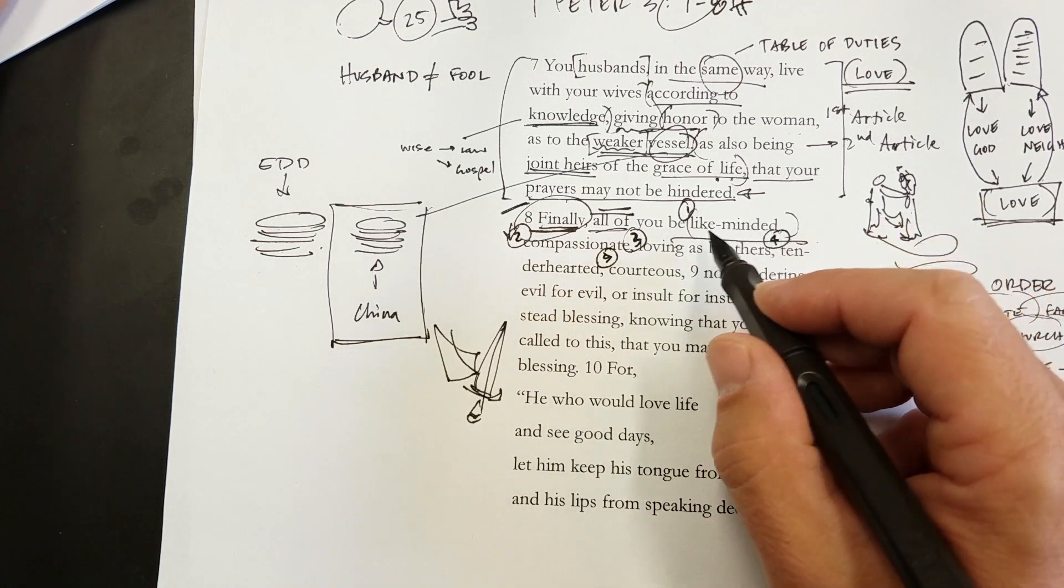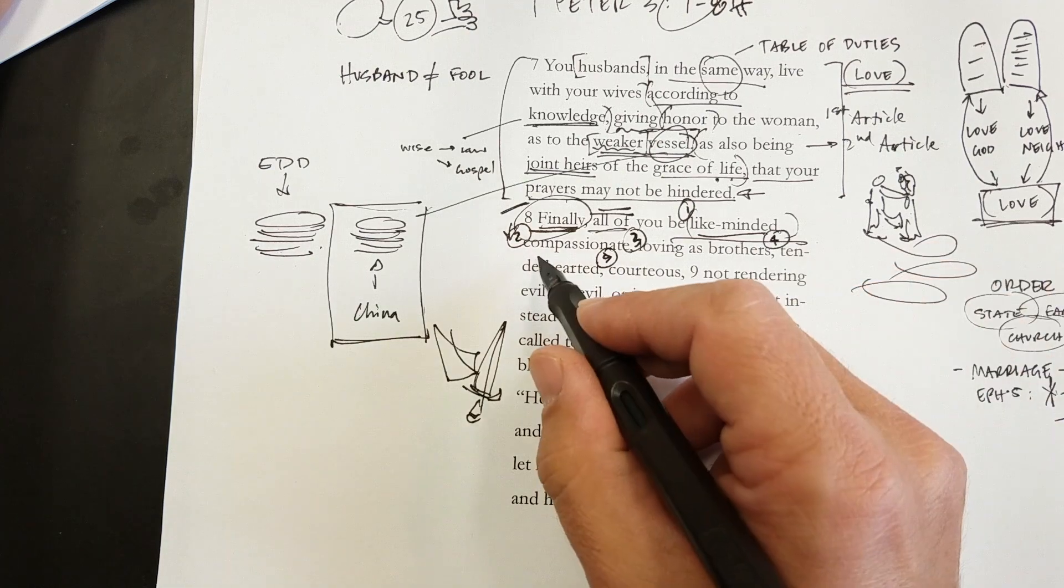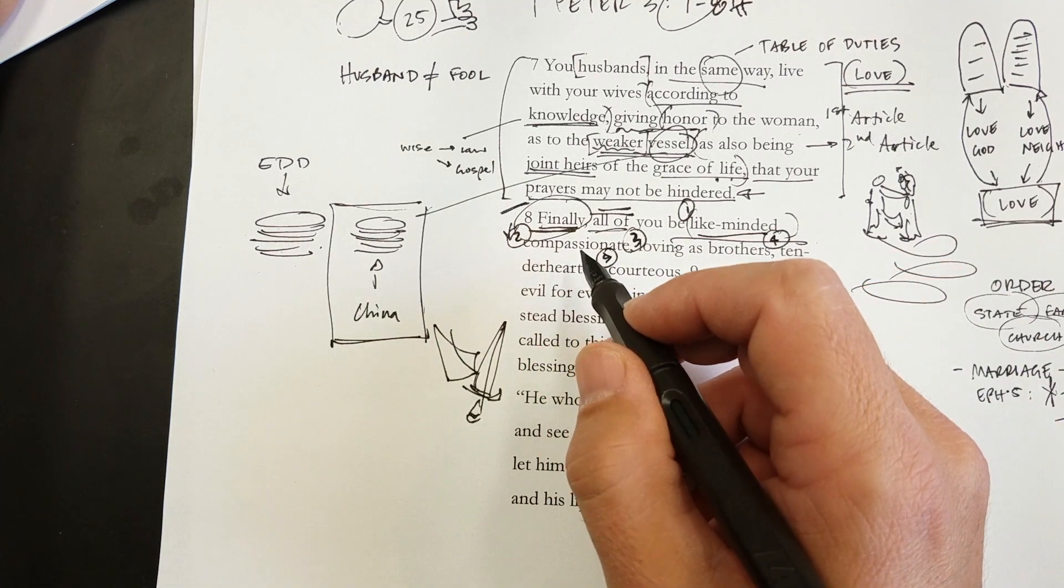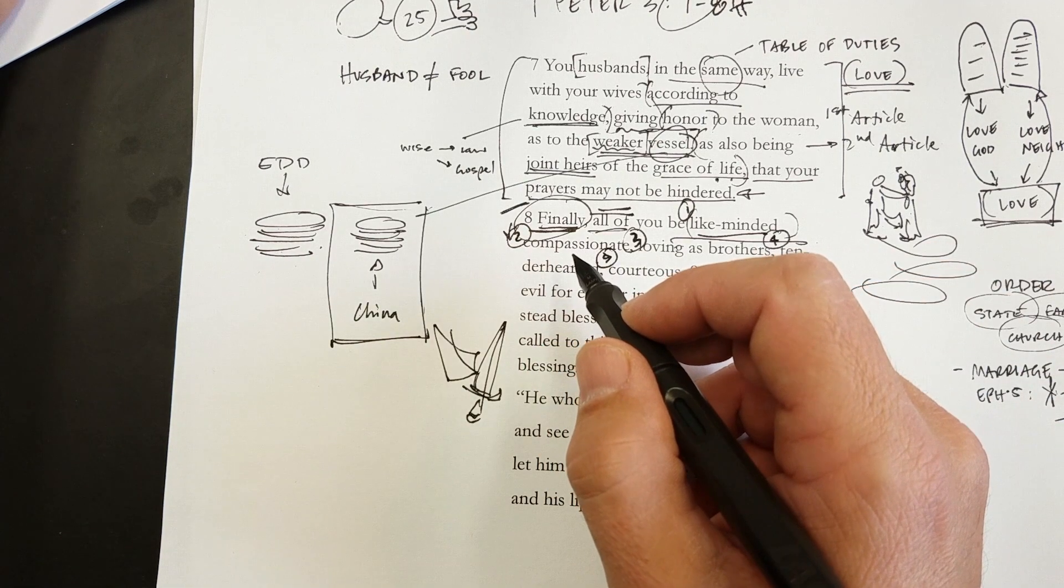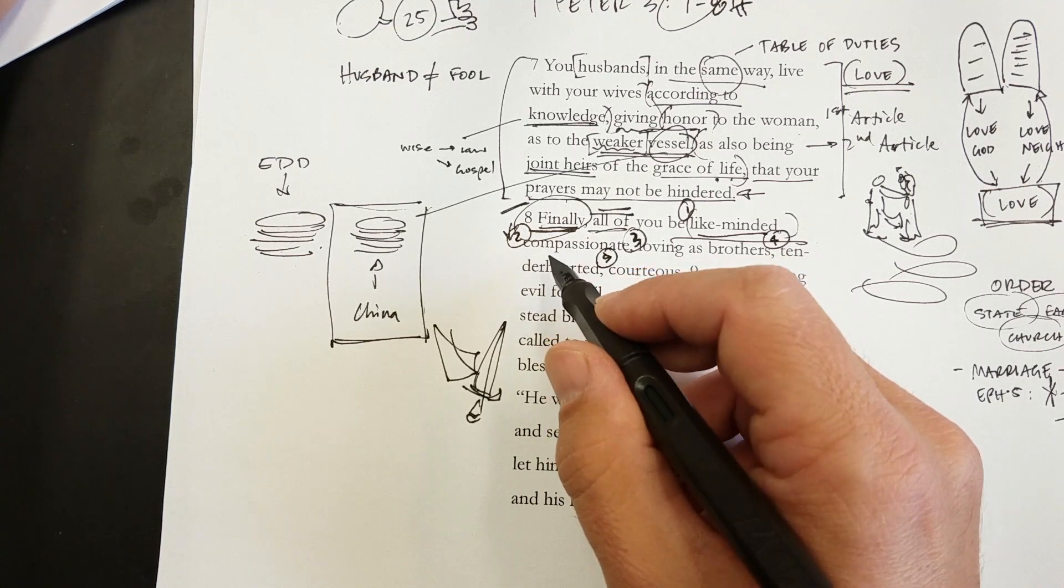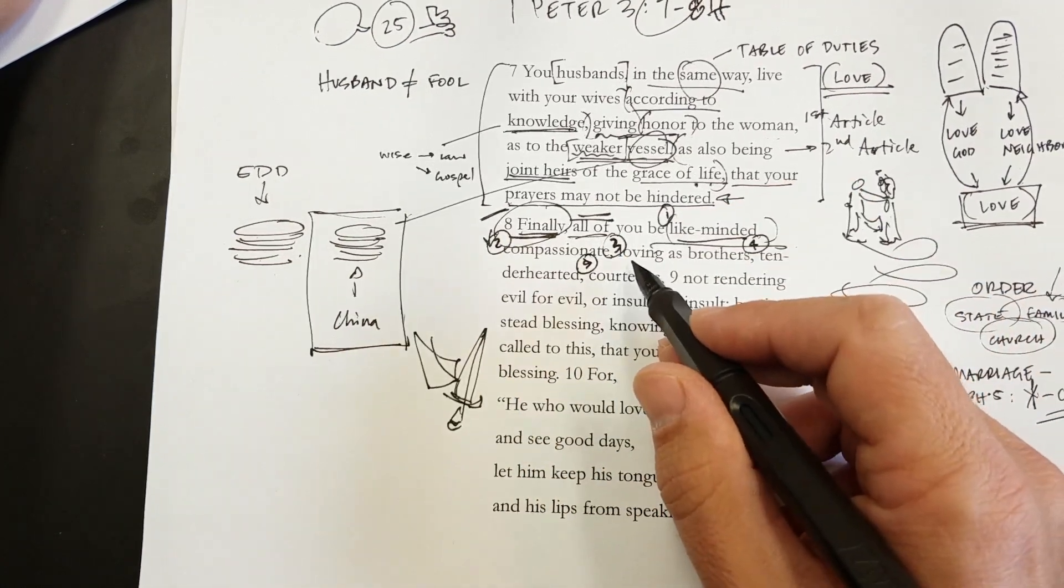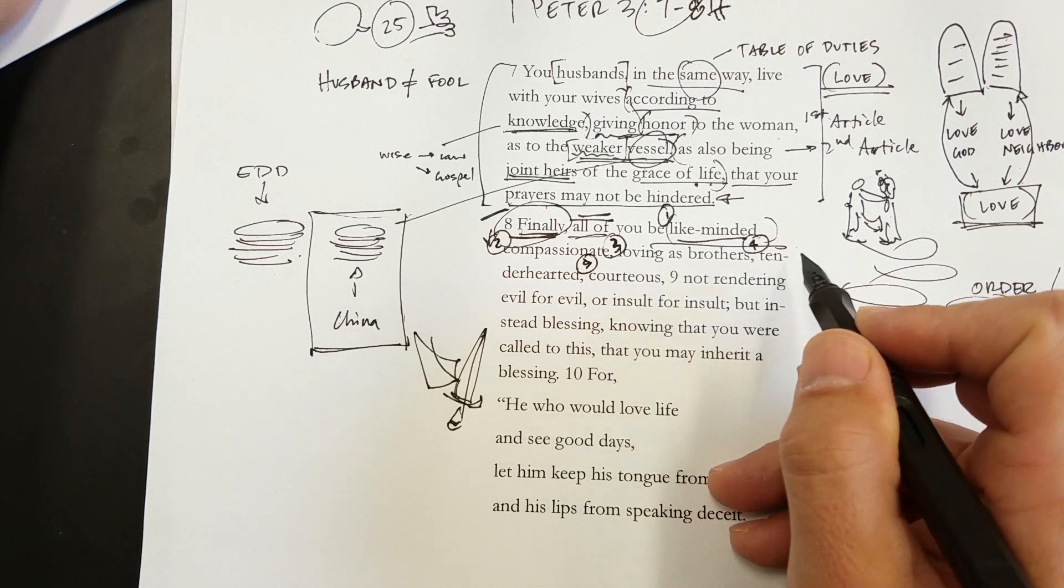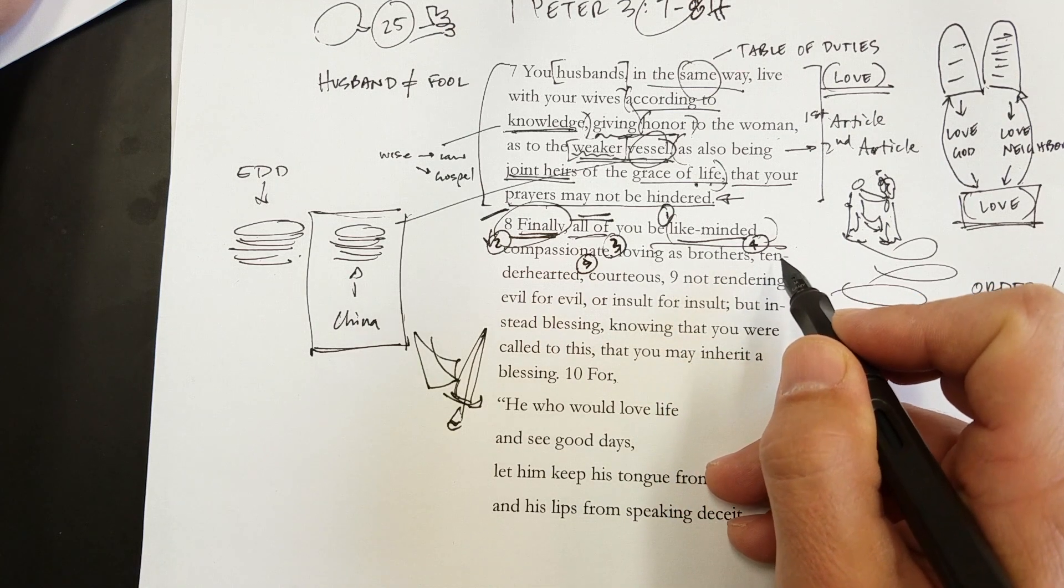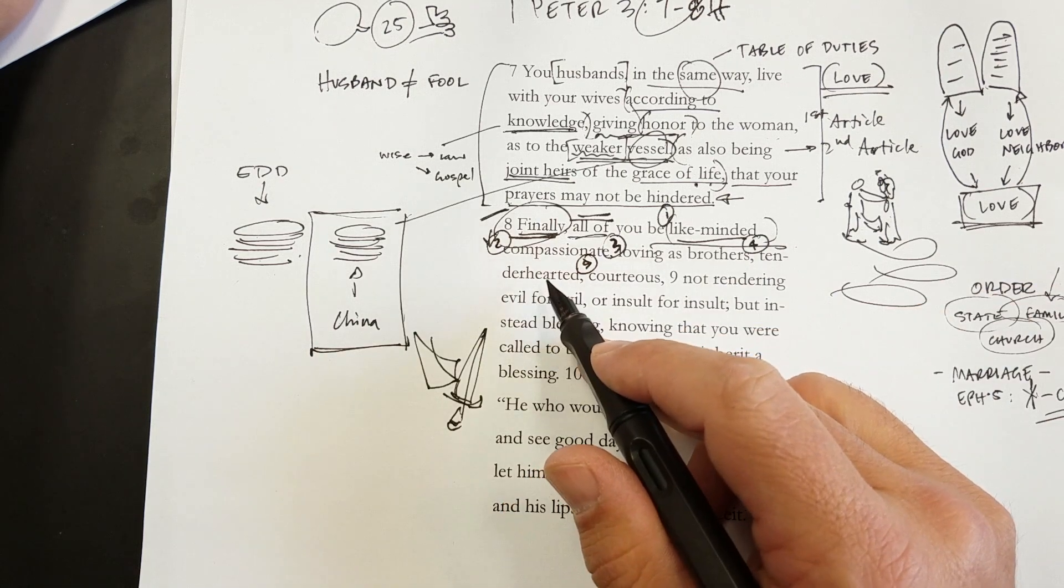The homophronus, that's like-minded. That just means thinking the same. Here, the second word is sympathis. This means what's the word we get sympathetic from. So, feeling with one another. This is Philadelphia. Brotherly love. Loving one another. Brotherly.